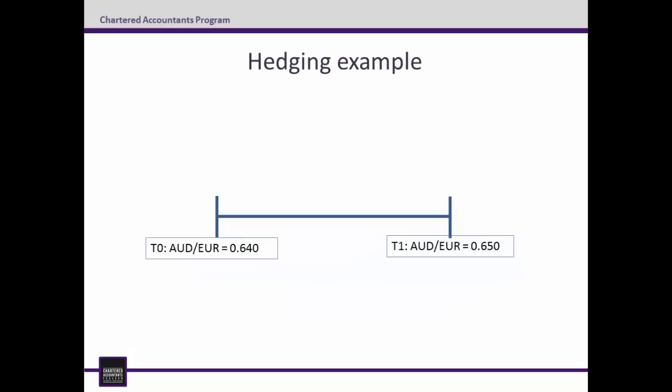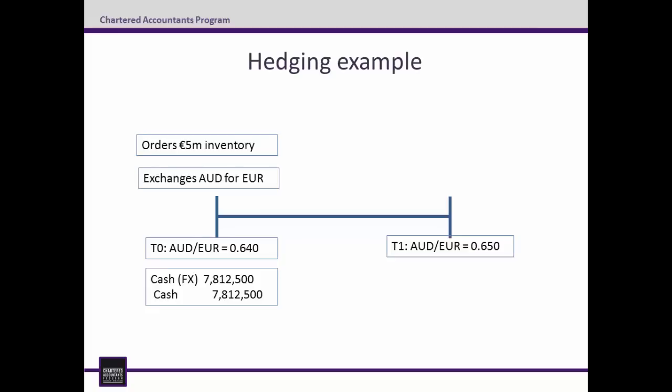This is best explained by expanding on the example I just gave. EasyBits Industries orders 5 million euro worth of goods from an overseas supplier. At the time of the order, the Aussie dollar-euro exchange rate is 0.64, so the company expects to pay $7,812,500. Concerned that the Aussie will weaken against the euro, EasyBits exchanges $7,812,500 and receives 5 million euro to hedge its exposure. The entry for this is: Debit Cash Foreign Exchange $7,812,500 and Credit Cash $7,812,500.